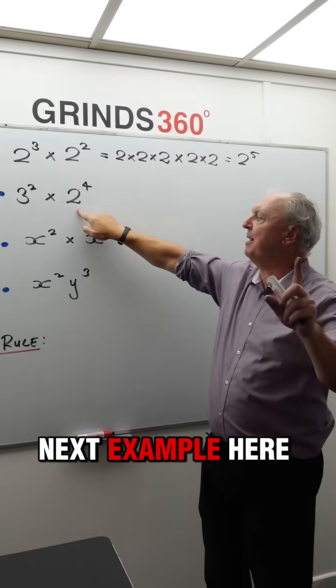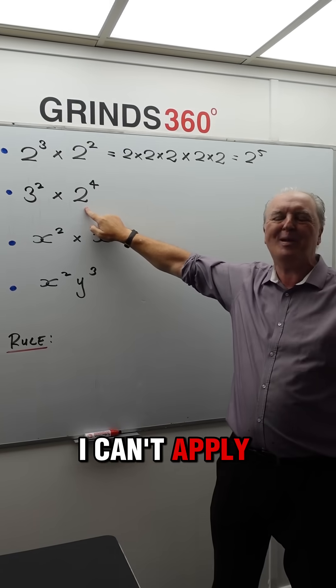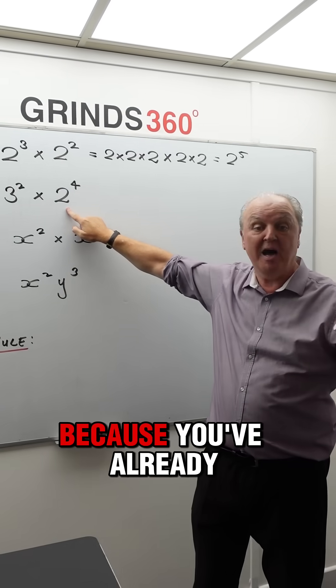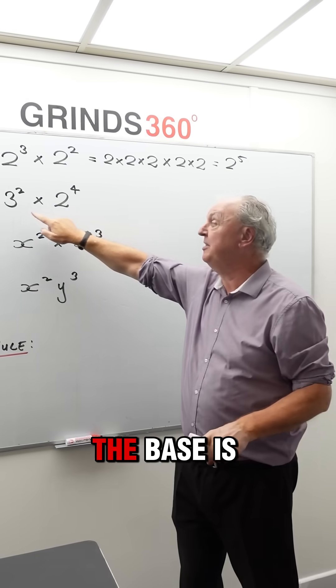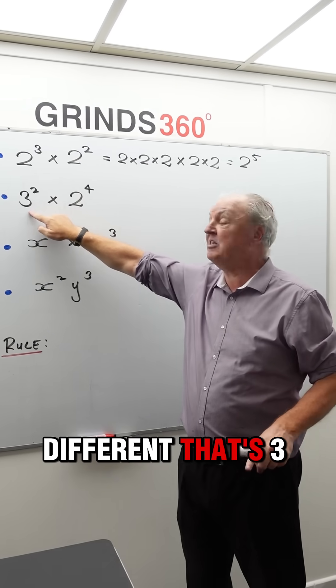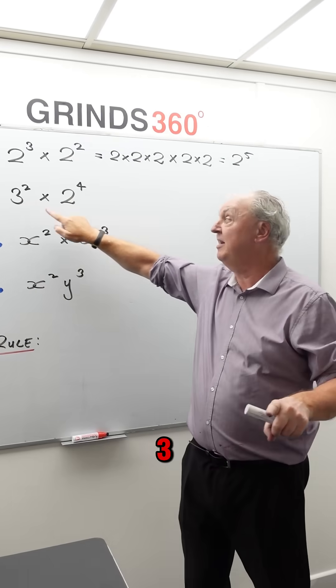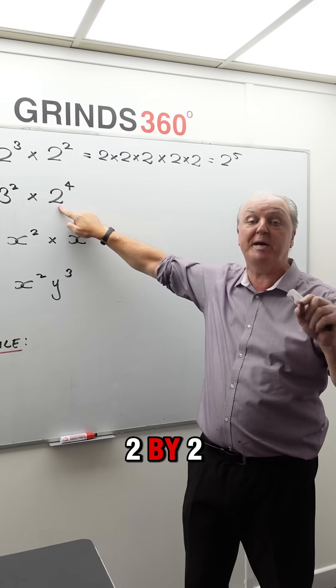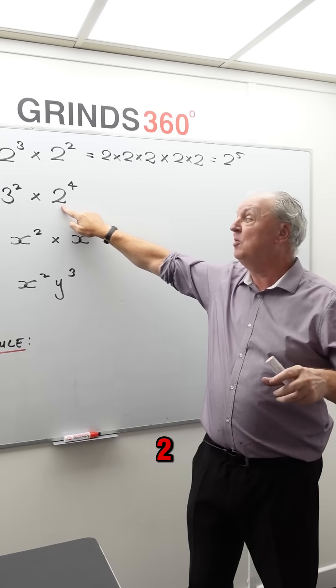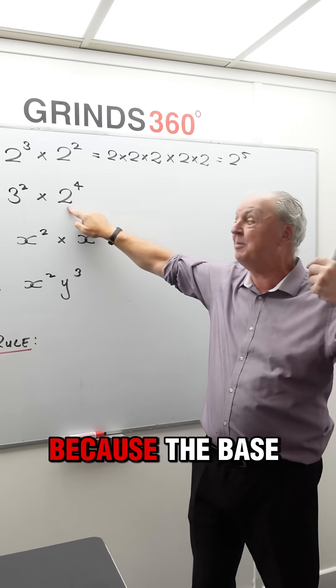Look at this next example here. I can't apply my rule here because the base is different. That's 3 squared, 3 by 3, and that's 2 to the power of 4, which is 2 by 2 by 2 by 2. You can't apply your rule there because the base is different.